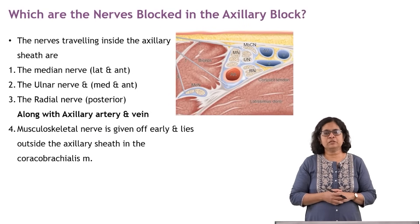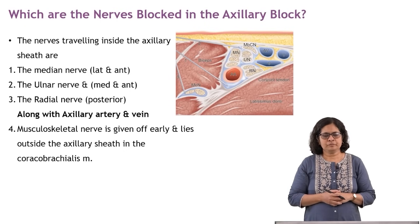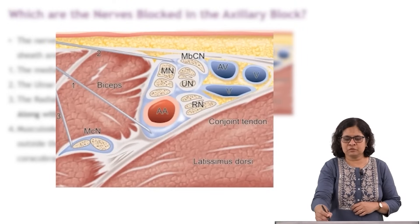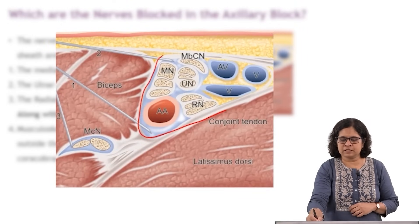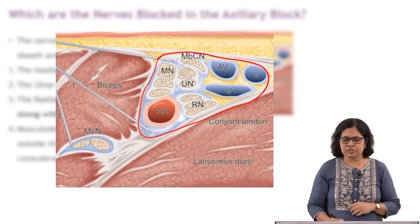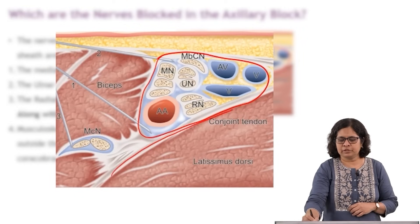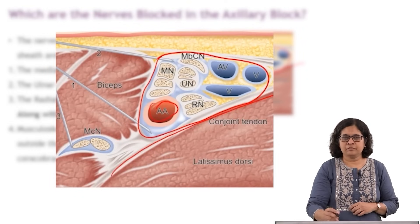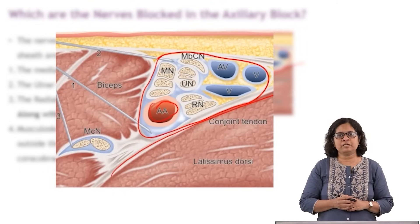The next question often asked is: what nerves are blocked by the axillary block? These are the nerves carried within the axillary sheath. The axillary artery is a single artery with multiple veins, and within the axillary sheath there are three main nerves arranged around it.